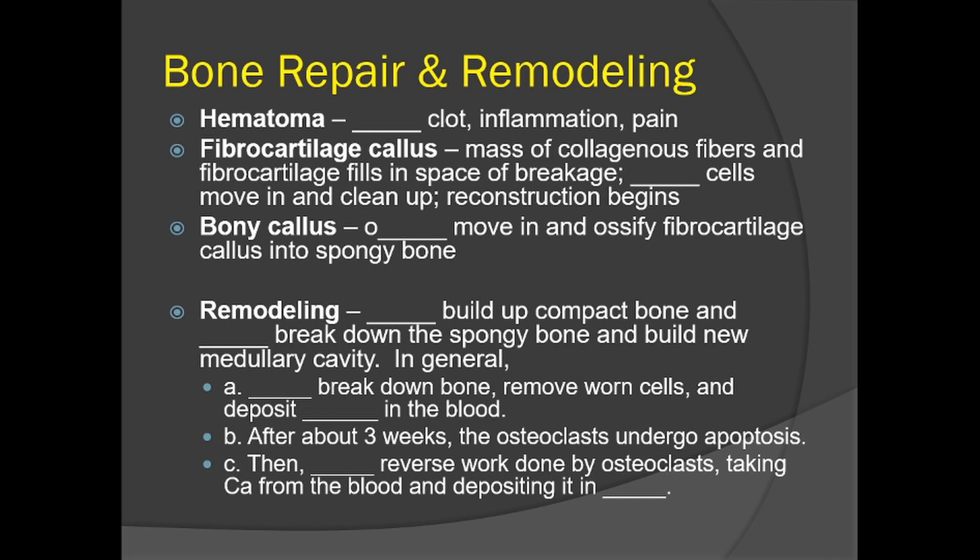Then phagocytic cells — white blood cells — move in and clean up. Reconstruction begins and building up of the bone starts to happen. Then a bony callus forms — we start with the fibrocartilage callus, then the bony callus. Which type of bone cells move in to ossify? Those would be the osteoblasts. The osteoblasts move in and ossify the fibrocartilage callus into spongy bone. That's how bone repair functions.